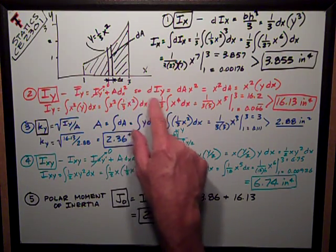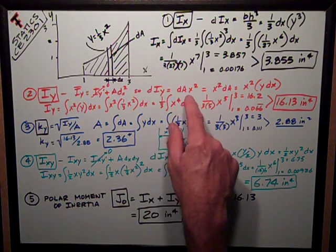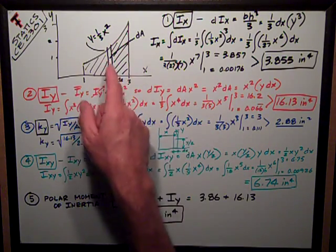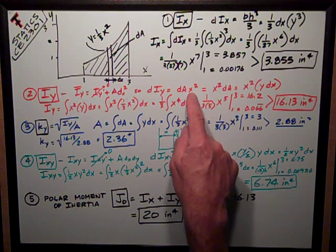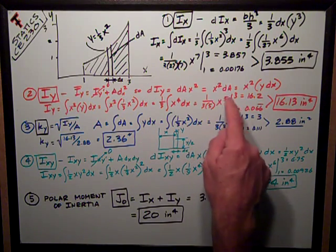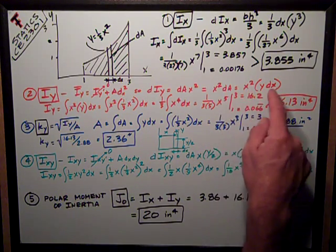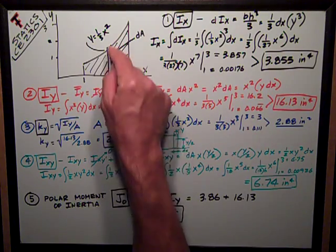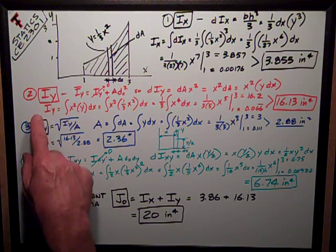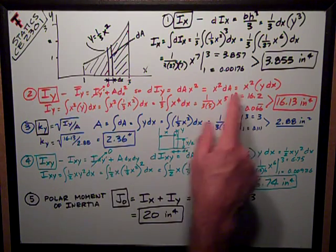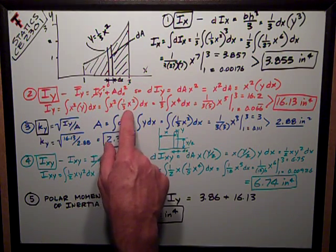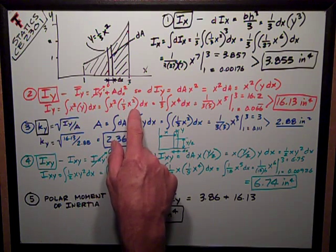The derivative of Iy is dA, this area, times its x distance squared. Rearranging that, the derivative of Iy is x²dA, which equals x² times dA is y dx. Remember for that little strip. So now I can write my integral out, Iy equals the integral of x²y dx, so I substitute in this value for y of 1/3 x², and I get this expression.